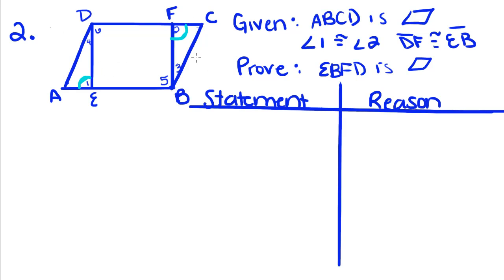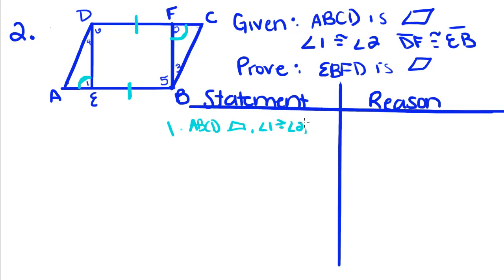And DF is congruent to EB. So first we're going to rewrite our given: ABCD is a parallelogram, angle 1 congruent to angle 2, DF congruent to EB. And that's our given.